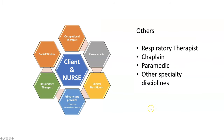Within the circle of care in the acute care setting, you may come across an occupational therapist, physiotherapist, clinical nutritionist, primary care provider in the form of a physician or nurse practitioner, respiratory therapist, social worker, and others such as the chaplain, paramedic, and other specialty disciplines — with the client and nurses at the center.